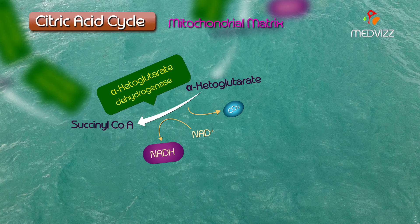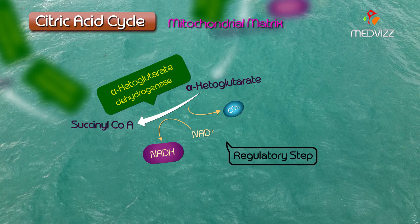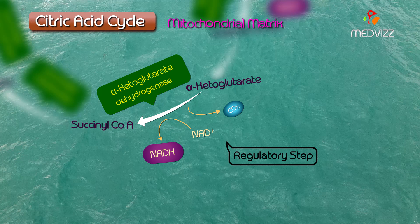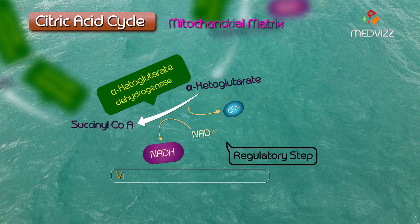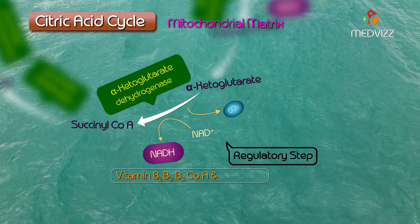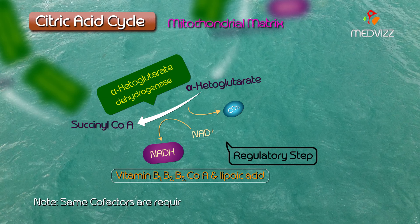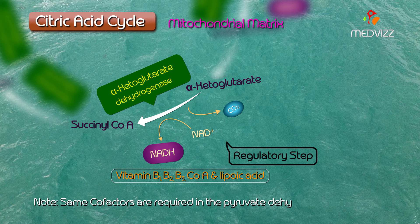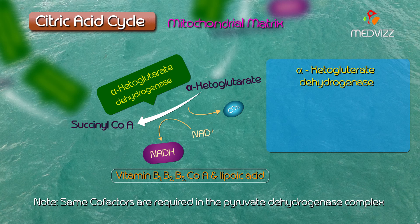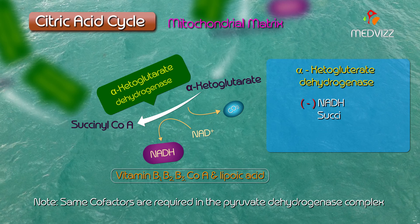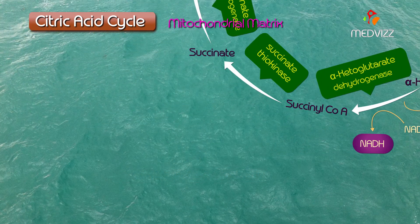This is a regulatory step that generates a 4-carbon chain and requires many coenzymes including vitamin B1, B2, B3, coenzyme A, and lipoic acid. Note the important point that the same cofactors are required in the pyruvate dehydrogenase complex. Alpha-ketoglutarate dehydrogenase is inhibited by NADH, succinyl-CoA, ATP, and GTP.